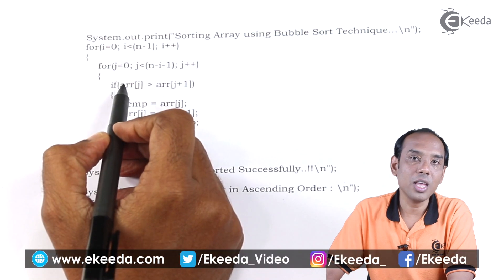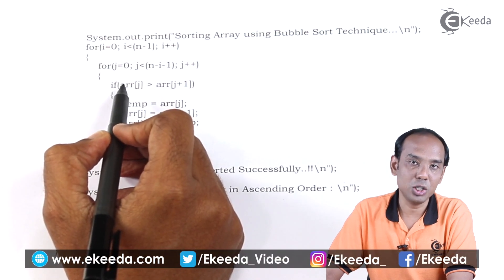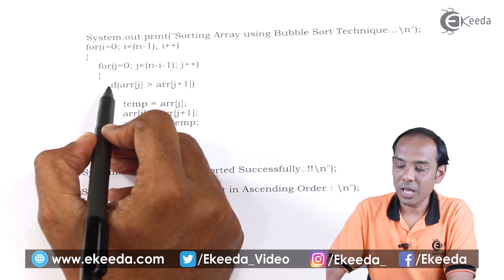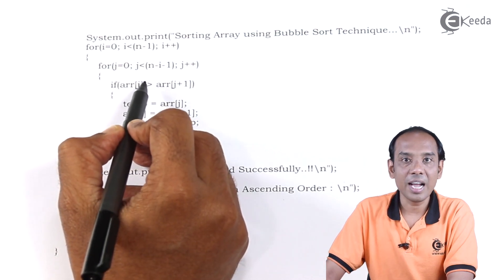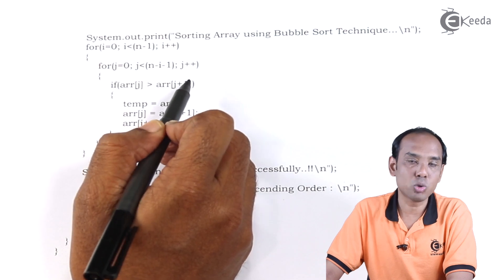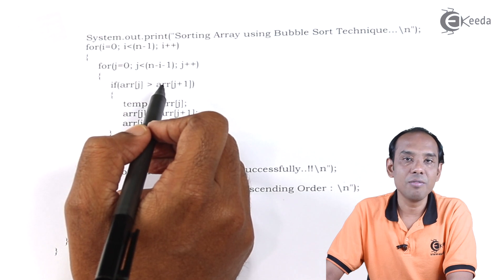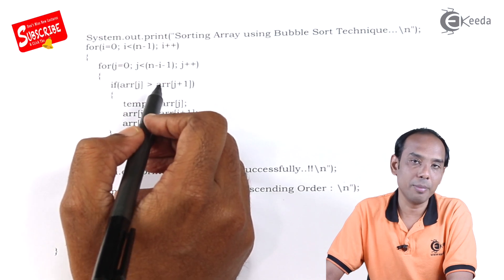After this we will go for the if condition. We will check the condition. Since we are arranging the elements in ascending order, we are going to use if arr[j] greater than arr[j+1]. If so, then only we will go for the swapping of the elements. Otherwise we will not swap.